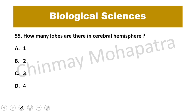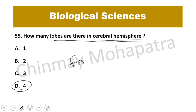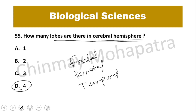Question 55, the last question: How many lobes are there in the cerebral hemisphere? The cerebral hemisphere is divided into four lobes: frontal lobe, parietal lobe, temporal lobe, and occipital lobe — four different lobes of the cerebral hemisphere.